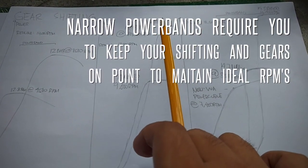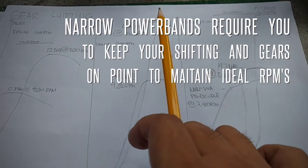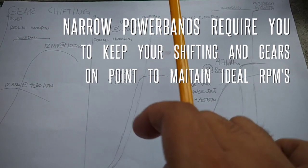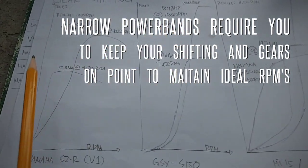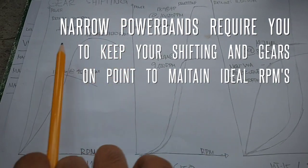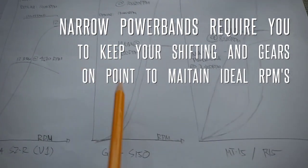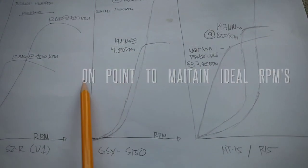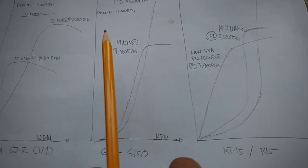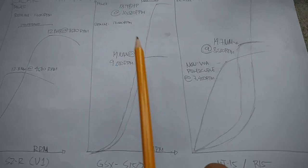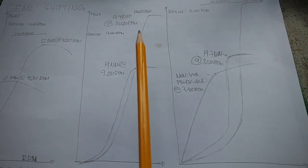Kailangan i-maintain mo yun para masigla yung motor mo. In comparison, from 4,500 to 7,500 RPM, masigla si SZ. Whereas si GSX, below 9,000, wala siyang pwersa. Pero from 9,000 to 10,500, humahatak siya.